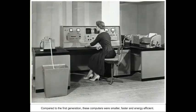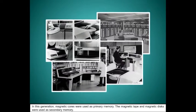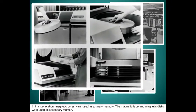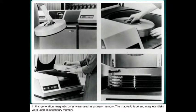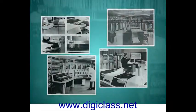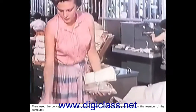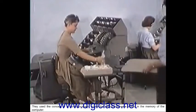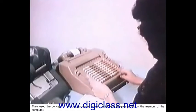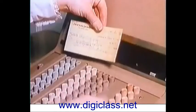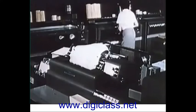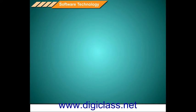Compared to the first generation, these computers were smaller, faster, and energy efficient. In this generation, magnetic cores were used as primary memory. Magnetic tape and magnetic discs were used as secondary memory. The second-generation computers still relied on punched cards and printouts for outputs. They used the concept of a stored program, where the instructions were stored in the memory of the computer.